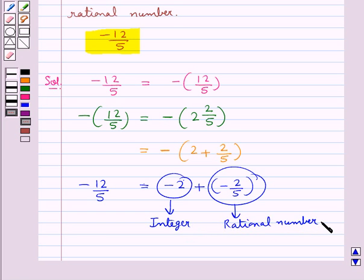So the given rational number is expressed as the sum of an integer and a rational number. This completes the session. Hope you have understood the solution for this question.